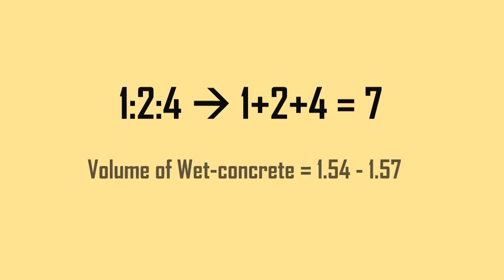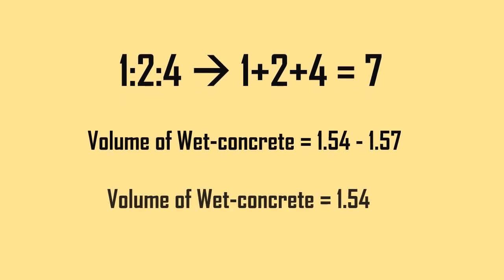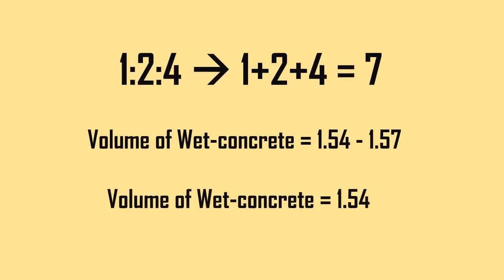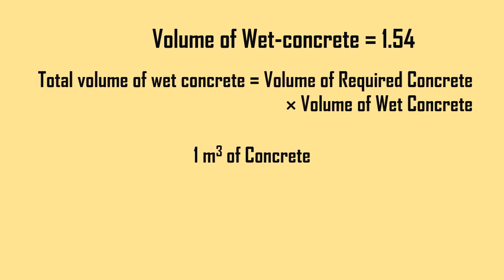Next, choose the volume of wet concrete between 1.54 and 1.57; it is best to go with 1.54. Multiply the volume of concrete required by the volume of wet concrete to get the total volume. In our case, we require 1 meter cubic of concrete, so 1 × 1.54 = 1.54.